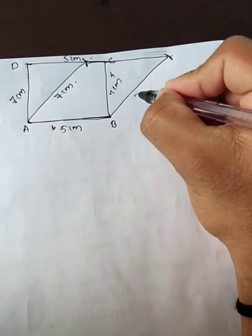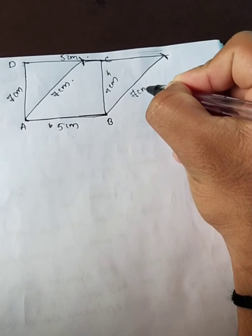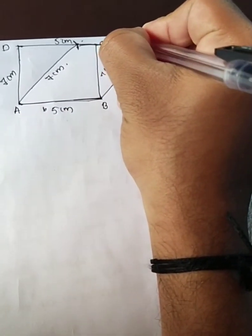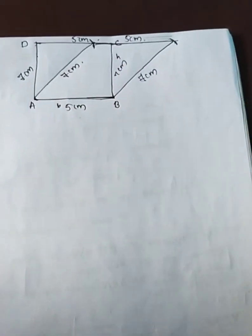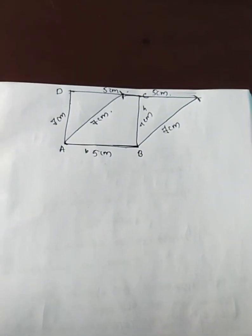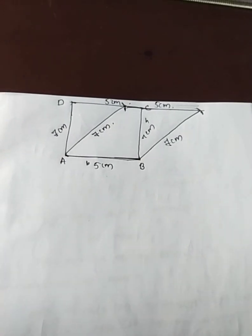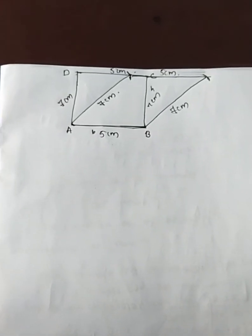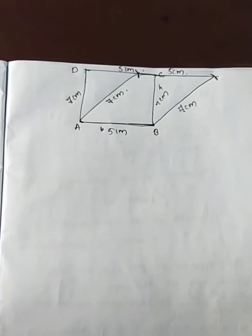Now we have a window — 7 cm and 5 cm. This is how it is. Okay, now we have our parallelogram.